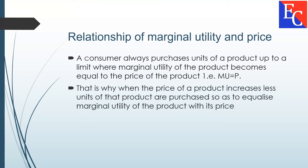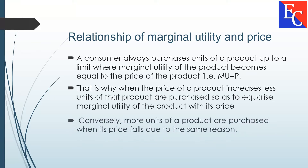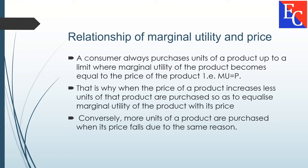That is why when the price of a product increases, fewer units of that product are purchased so as to equalize the marginal utility of the product with its price. Conversely, more units of a product are purchased when its price falls, due to the same reason.